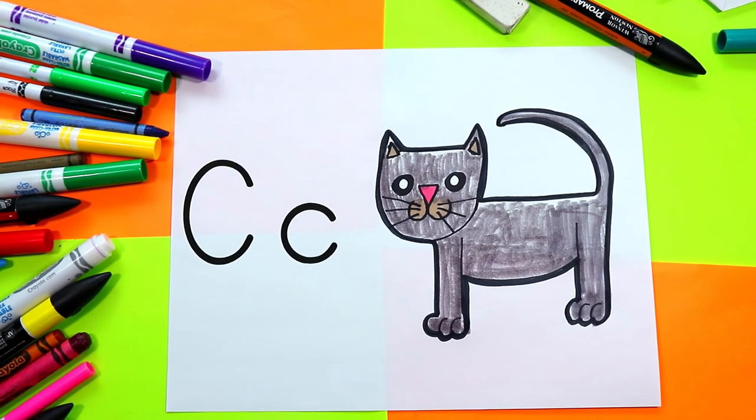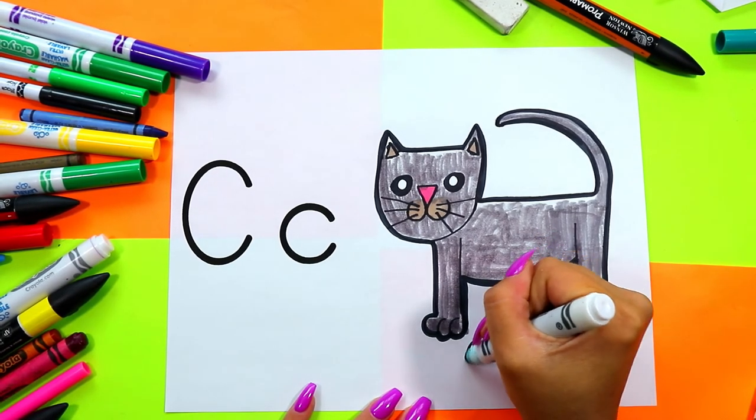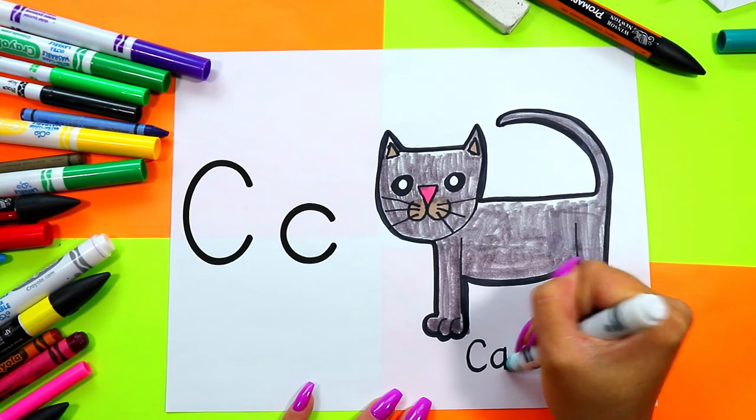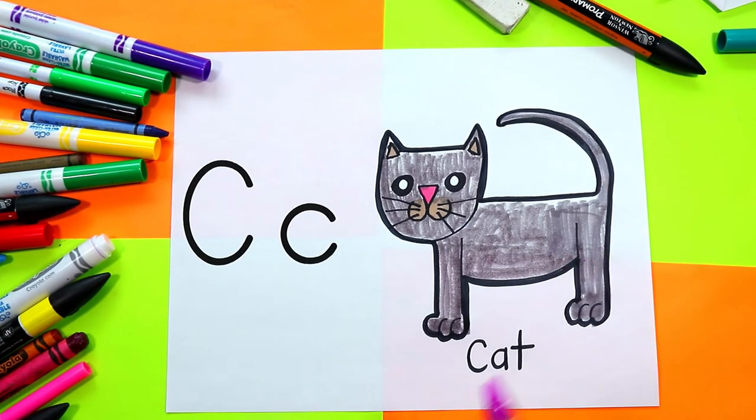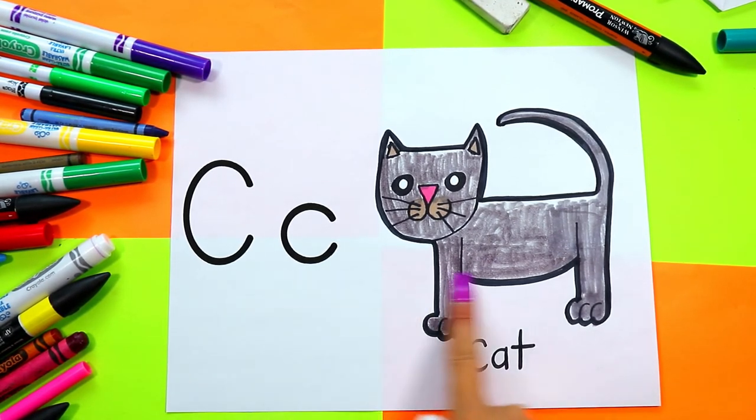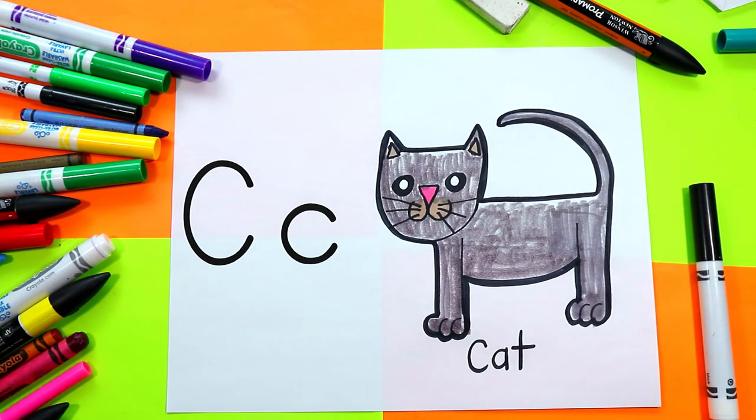Once you're done coloring in your cat, your lovely cat artwork is done. The word cat starts with the letter C. C-A-T, C-A-T spells cat, and once you're done your lovely cat artwork is done.